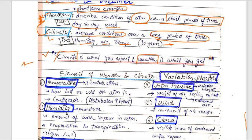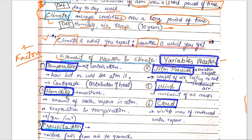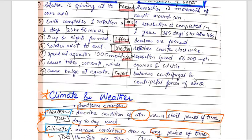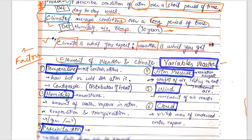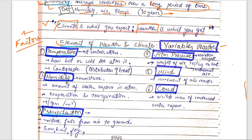Let's discuss the elements of weather and climate. You can be asked: what are the variables? What are the factors that affect weather and climate? Basically there are four or five factors. You can define two of them with two lines of explanation each.